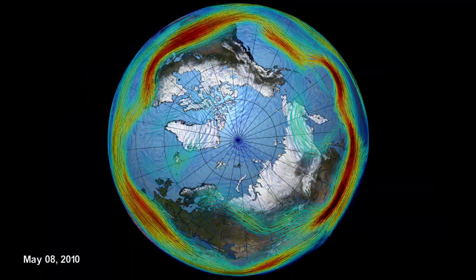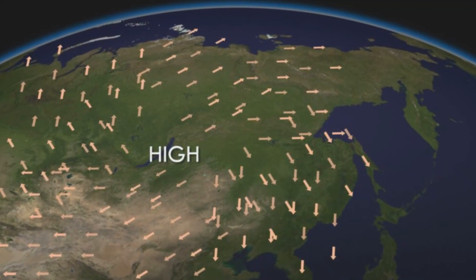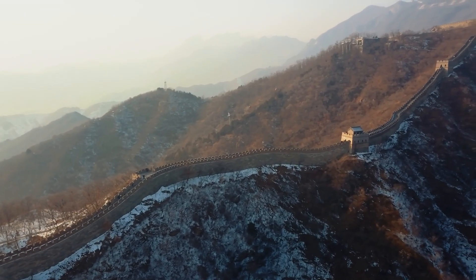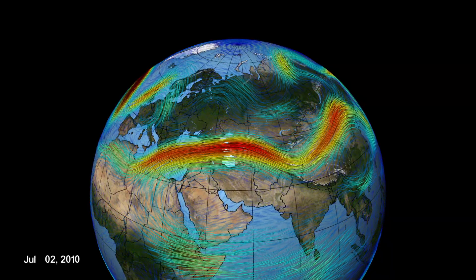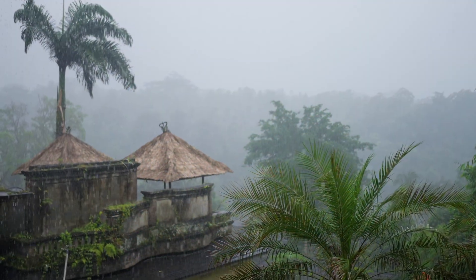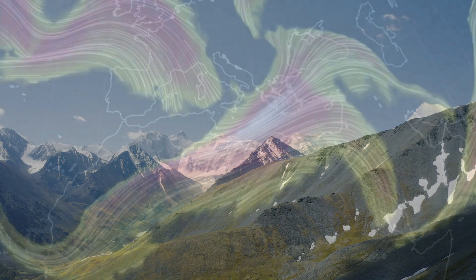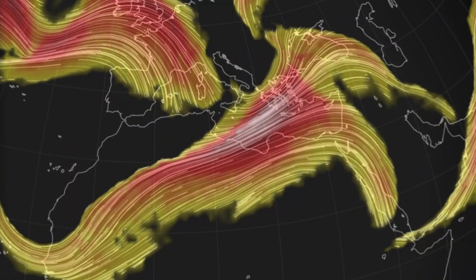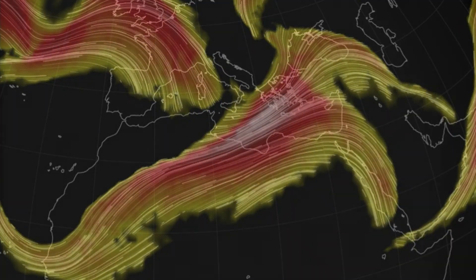Across Asia, both the polar and subtropical jet streams are active. In East Asia, a strong Siberian high drives the winter monsoon, while the polar jet stream steers and intensifies cold air outbreaks toward China, Korea and Japan. In South Asia, the subtropical jet guides winter storm systems from the Mediterranean into northern India, Pakistan and Nepal. These systems, known as western disturbances, bring important winter rainfall and mountain snow that help replenish water supplies. In North Africa and the Middle East, the subtropical jet stream plays a crucial role too — when it dips south, Mediterranean storm systems can reach the region, bringing rainfall and cooler conditions.